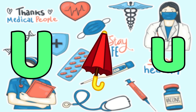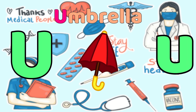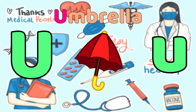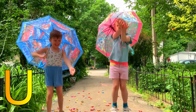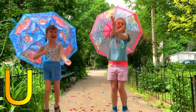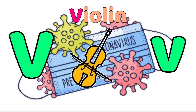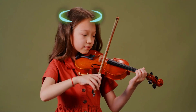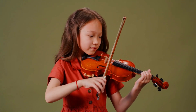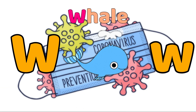U is for Umbrella. U-U-Umbrella, U-U-Umbrella. U, Umbrella. V is for Violin. V, Violin. V, Violin. V, Violin.